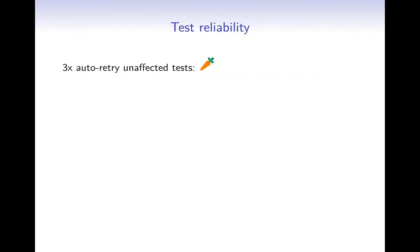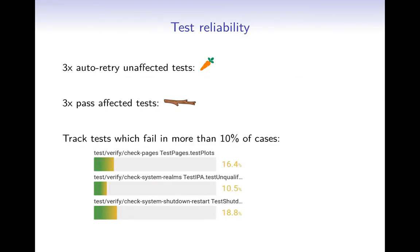However, this isn't sufficient — with just automatic retries you'd quickly introduce new flaky tests and overall quality would go down. So we introduced the counterweight: affected tests need to pass three times in a row. This has proven very effective at preventing the introduction of broken tests. We also track tests which fail too often — the random noise should distribute evenly, but tests failing more than 10% of the time are the ones breaking pull requests even with automatic retry. These are the ones we need to investigate and fix, and at any given time this list is very small so we can drive it to zero.